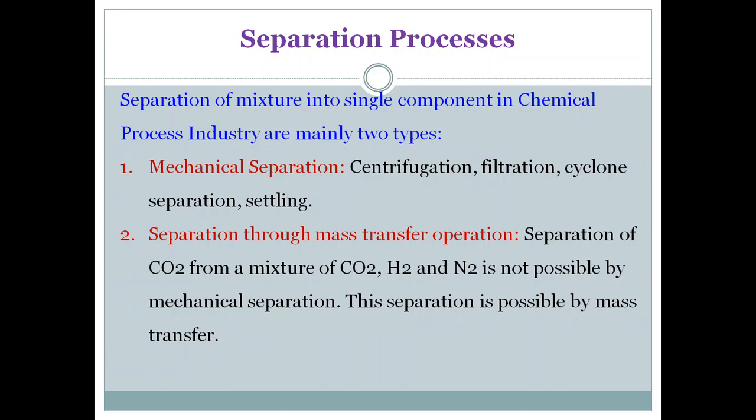The second type is separation through mass transfer operation. Separation of carbon dioxide from a mixture of carbon dioxide, hydrogen, and nitrogen is not possible by mechanical separation, but it is possible by mass transfer. So separation processes are two types: mechanical separation and separation through mass transfer.